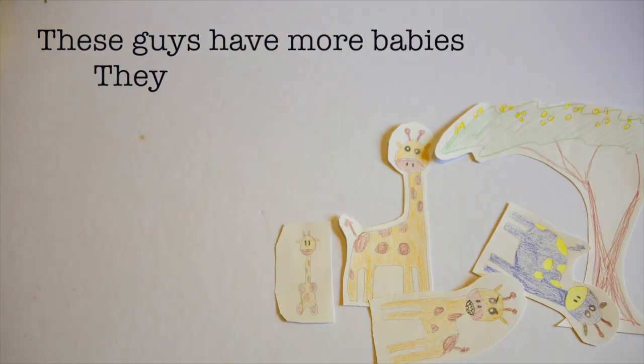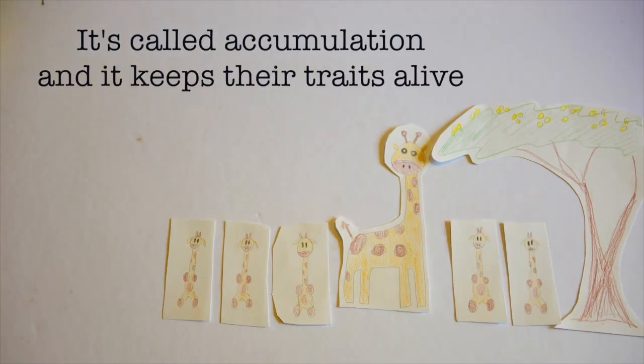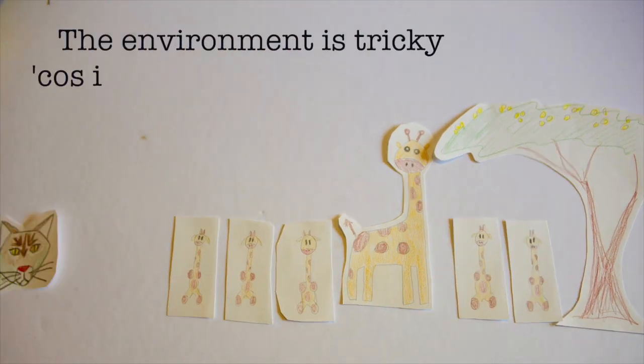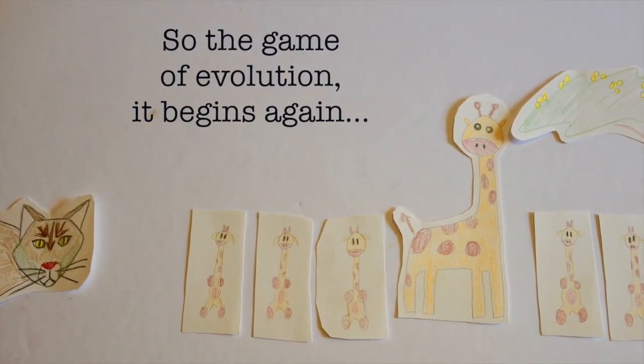These guys had more babies cause they did it to survive. It's called accumulation and it keeps their traits alive. The environment is tricky cause it always wants to change. So the game of evolution began again.